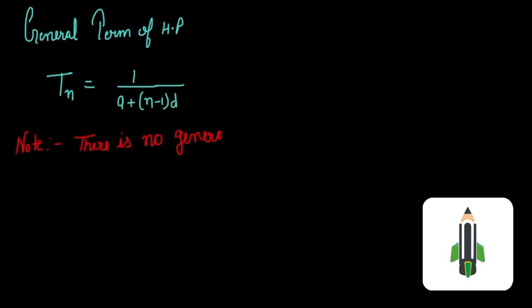General term of harmonic progression: TN is equal to 1 by A plus N minus 1 into D. Note there is no general formula to find sum of N terms of harmonic progression.